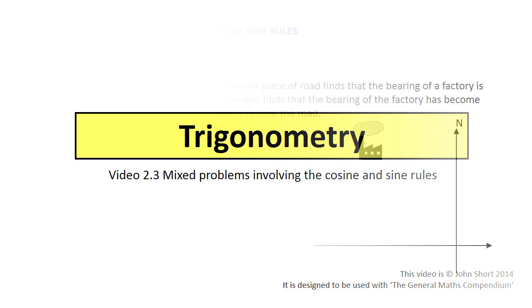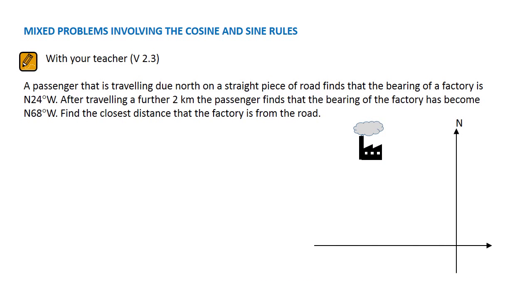In this video we are going to solve some sine and cosine rule problems. A passenger traveling due north on a straight piece of road finds that the bearing of a factory is north 24 degrees west. After traveling a further 2 km the passenger finds that the bearing of the factory has become north 68 degrees west. We need to find the closest distance that the factory is from the road.